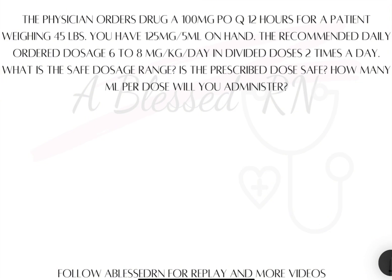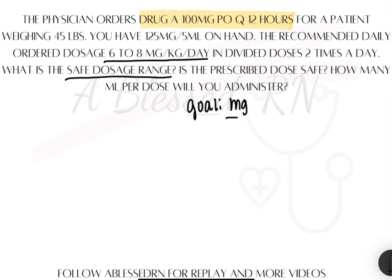First things first, with pediatric safe dosage problems, you are looking for the safe zone. You will not be doing anything with the order, but with the safe dose range. I'll highlight the order in yellow and look back at that once we find what the safe zone is. This is asking for the safe dosage range — not the daily dose — so we need to find milligrams per dose, not for the whole day, but for one dose.